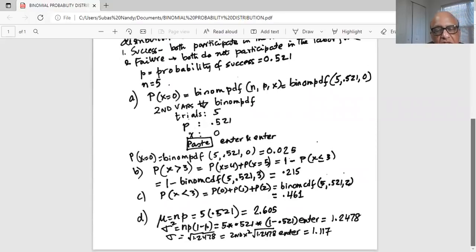Then it says find the standard deviation. Well, we will start with the variance, which is sigma squared equals n times p times (1 minus p). So in our calculator, n is 5 multiplied by p is 0.521 multiplied by left parenthesis 1 minus 0.521, close the right parenthesis and hit enter. And it's 1.2478.